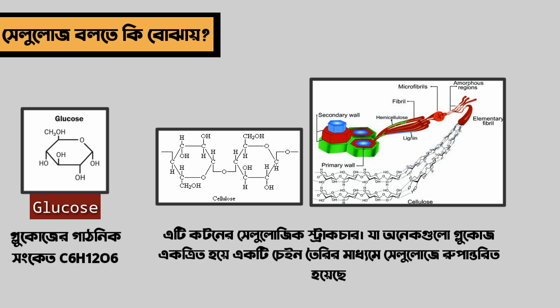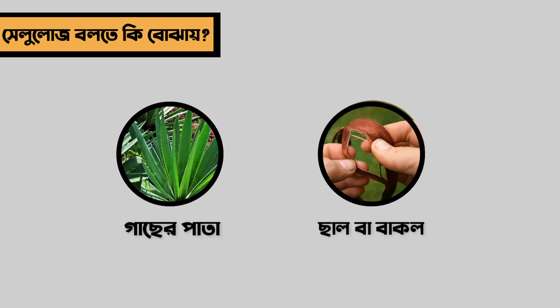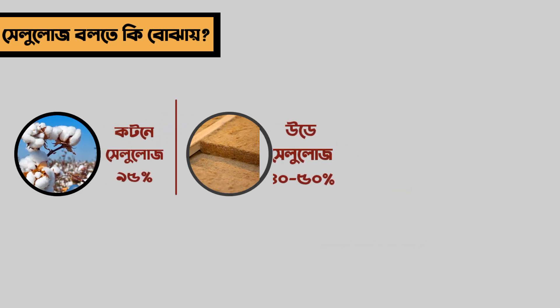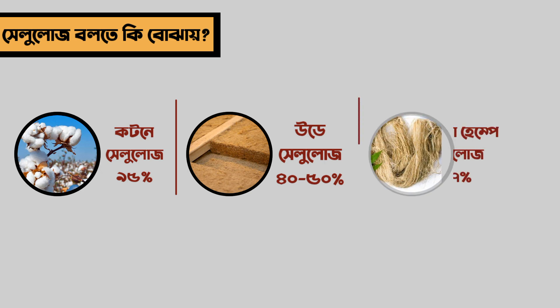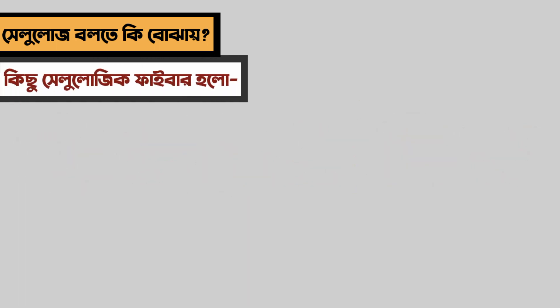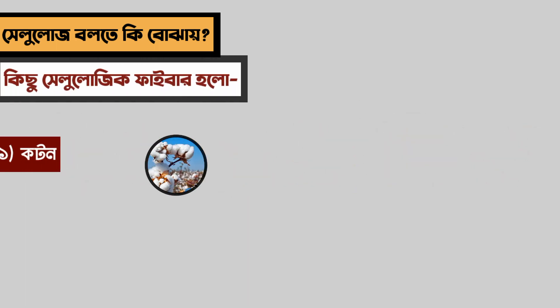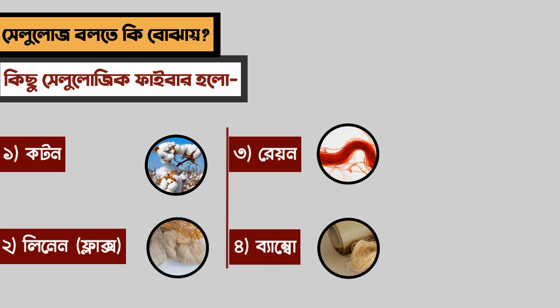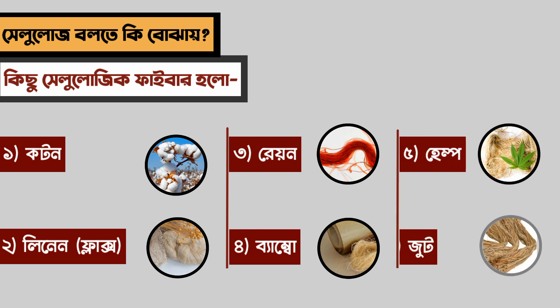The cellulose fiber is common. From cellulose fiber to cellulose, which is very small. The cellulose fibers include: 1. Cotton, 2. Linen, 3. Jaflax (Jute/Flax), 4. Rayon, 5. Bamboo, 6. Hemp, and 7. Jute Fiber.